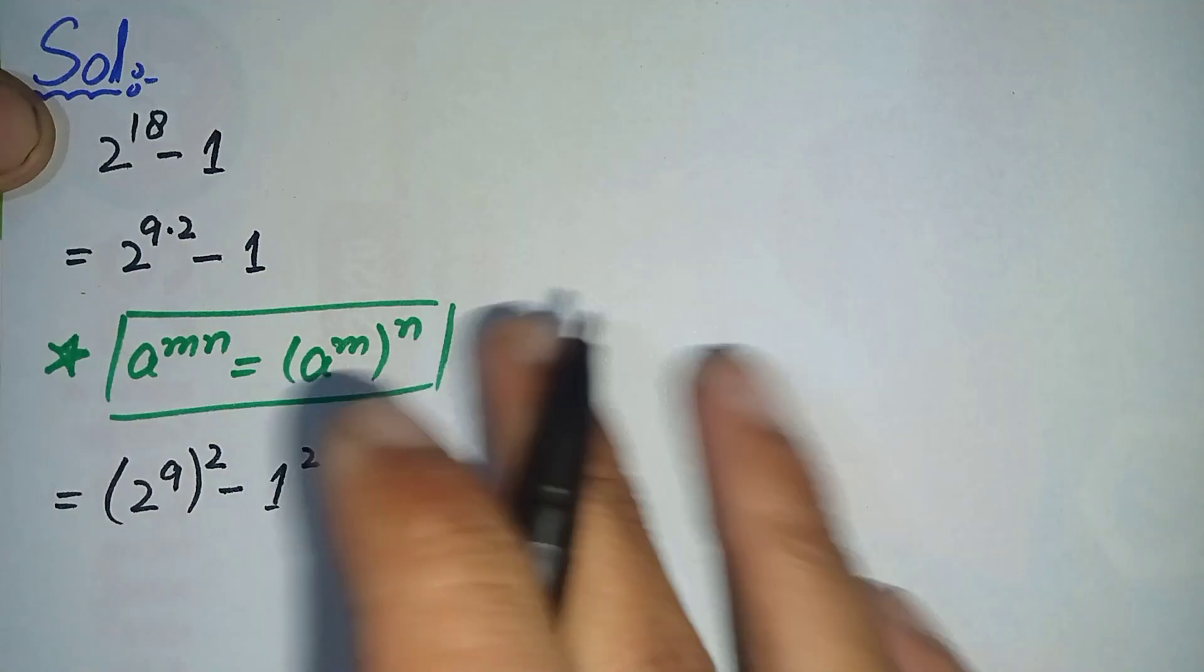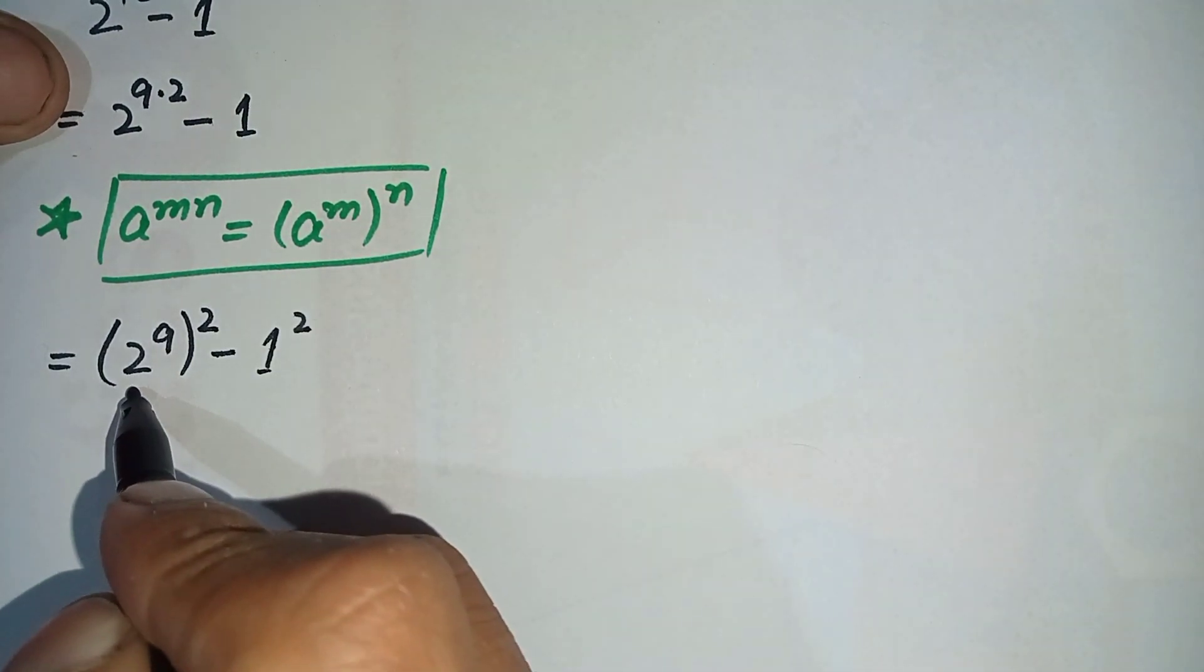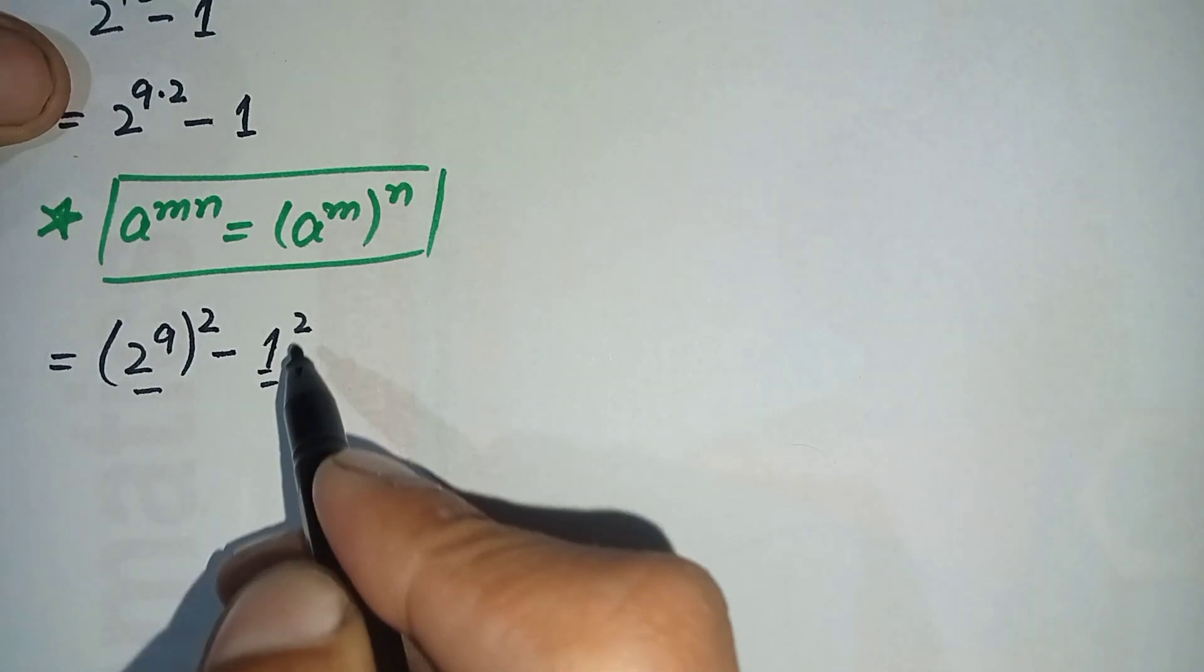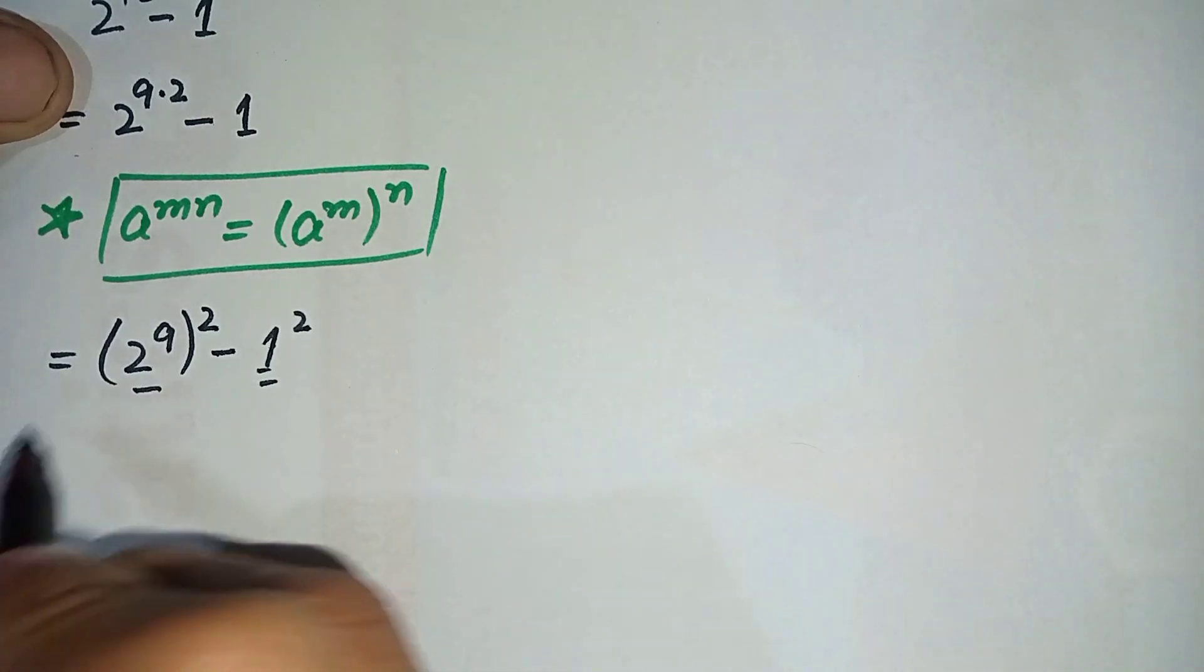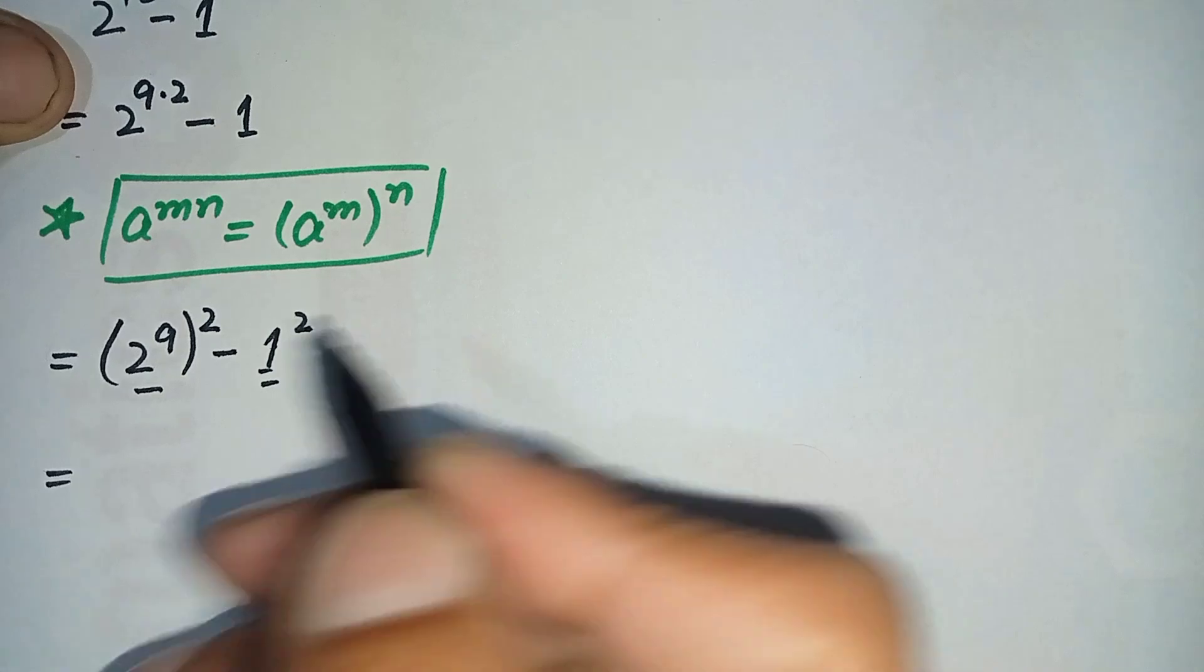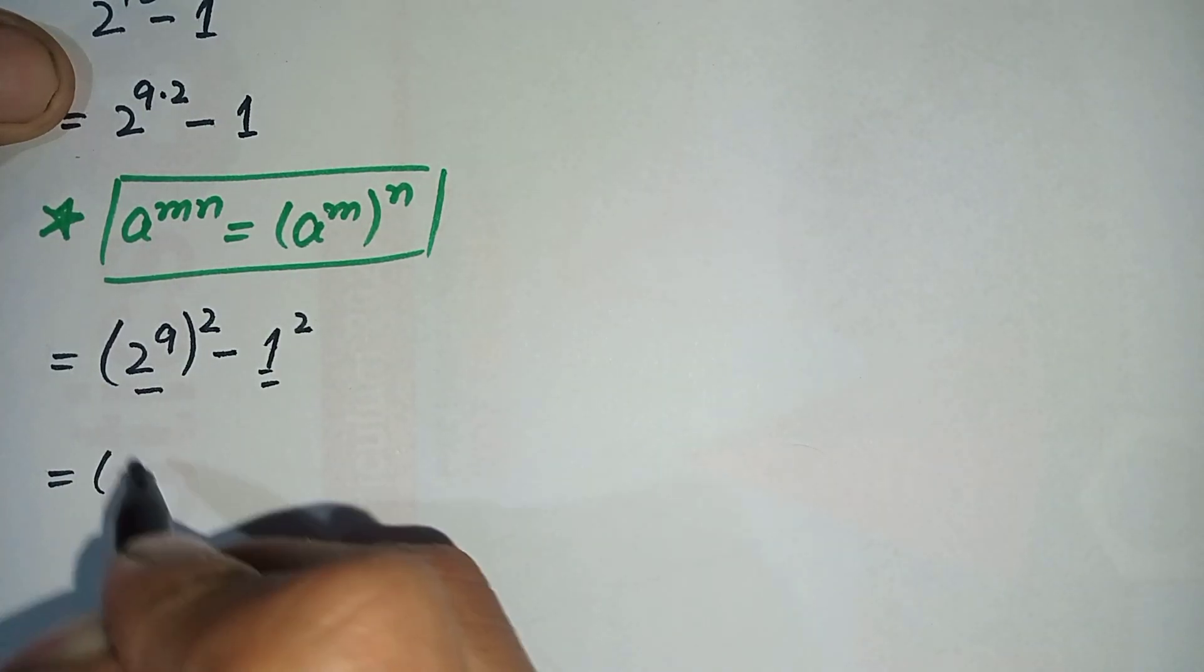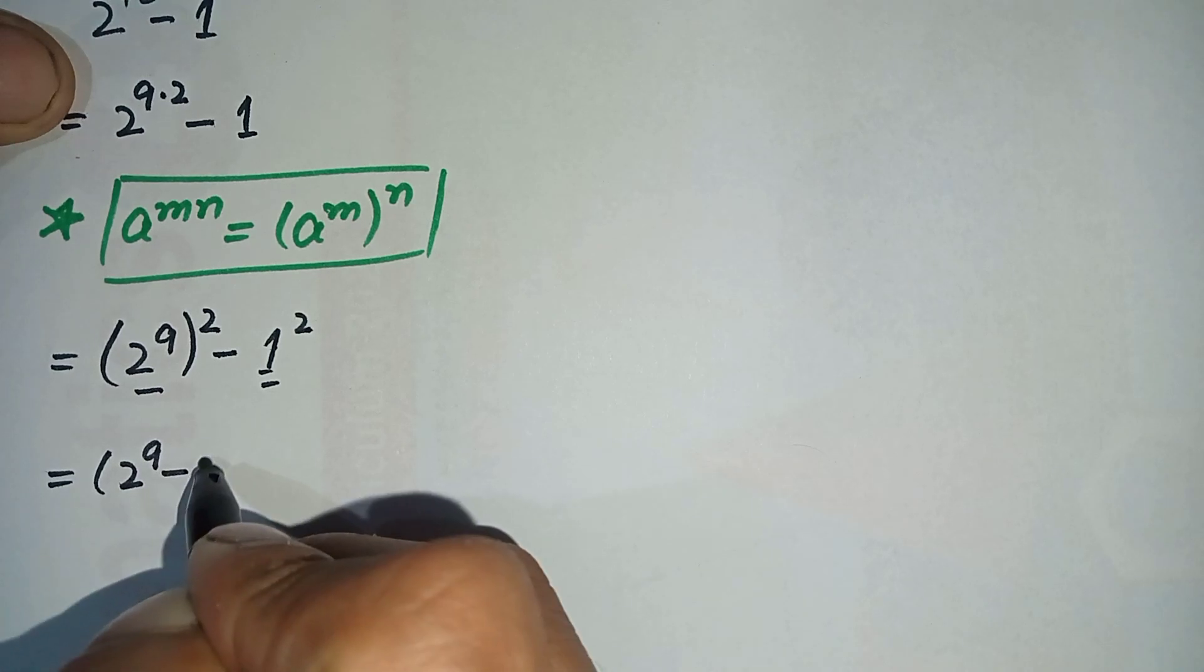Now here we will use a famous algebraic identity: a squared minus b squared, which is equal to a plus b into a minus b. So a is 2 raised to power 9 minus 1, times 2 raised to power 9 plus 1.